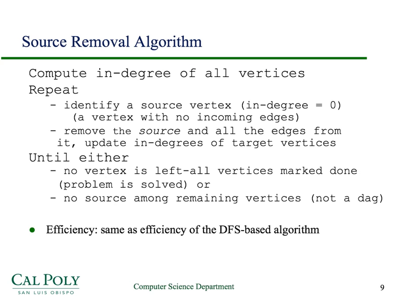This slide shows high-level pseudocode for the source removal algorithm. First, compute the in-degrees of all vertices. Then repeatedly loop: identify a source vertex — a vertex with in-degree 0 — and remove the source and all its edges by updating the in-degrees of target vertices. We don't actually change the graph; we just manipulate the array tracking in-degrees. We keep doing this until all vertices are marked done, giving a linear ordering.